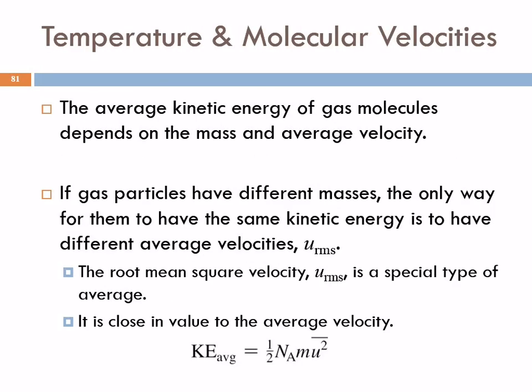Temperature and molecular velocities. The average kinetic energy of a gas molecule depends on its mass and its average velocity: kinetic energy equals one-half mass times velocity squared. If the particles have different masses, the only way for them to have the same kinetic energy would be to have different average velocities.